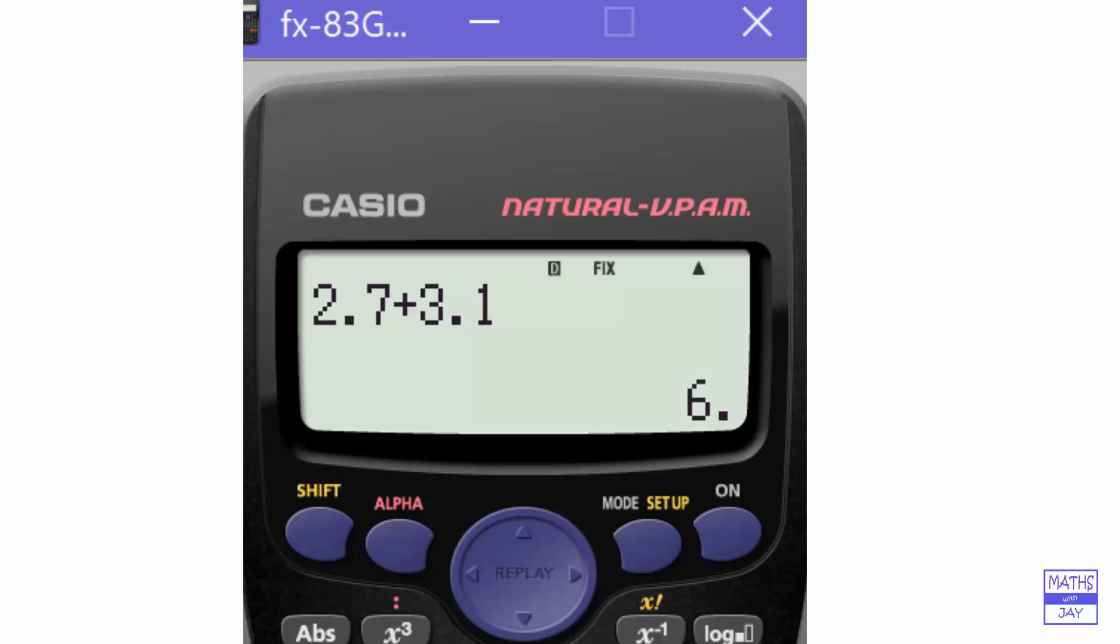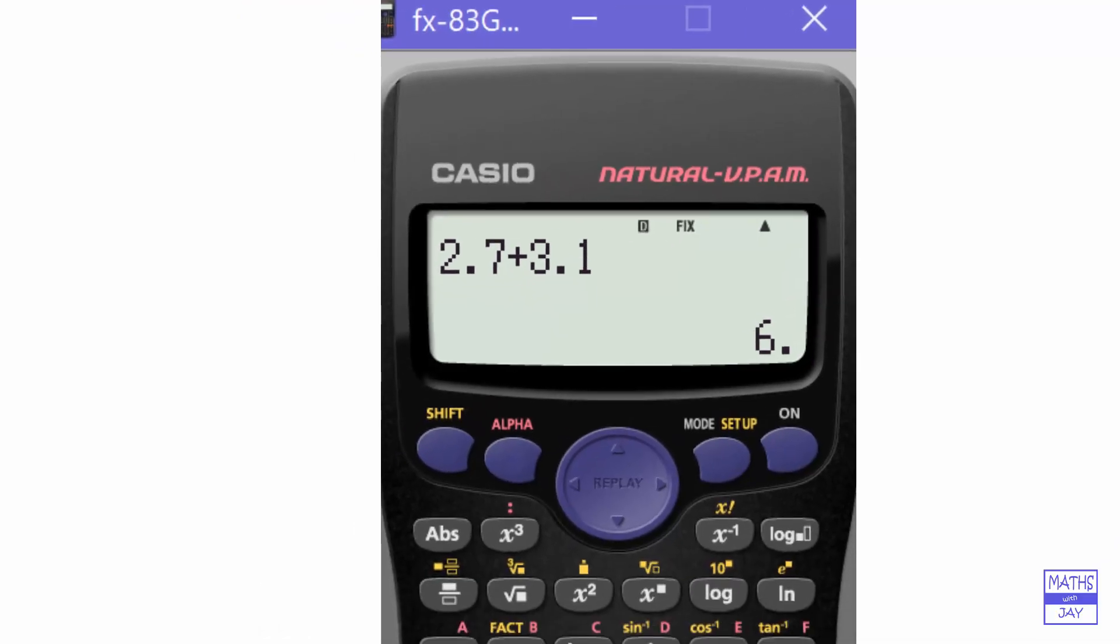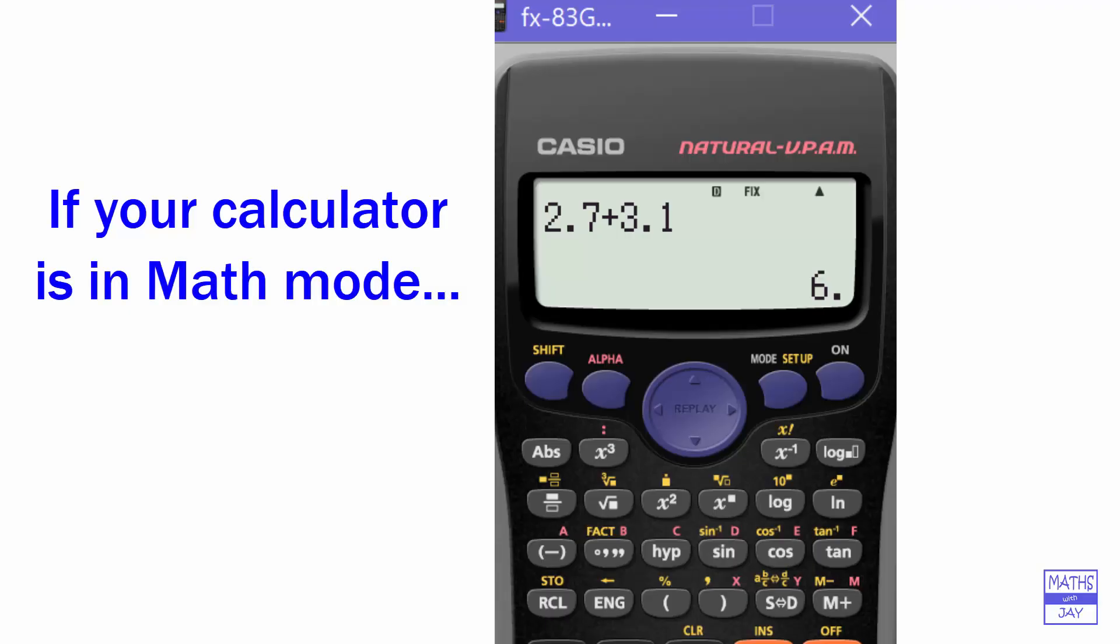If you've got your calculator set to math mode, when you do these sorts of calculations they will come out as a top heavy fraction, so what you would want to do is use the SD key and that will give you the answer that you want.